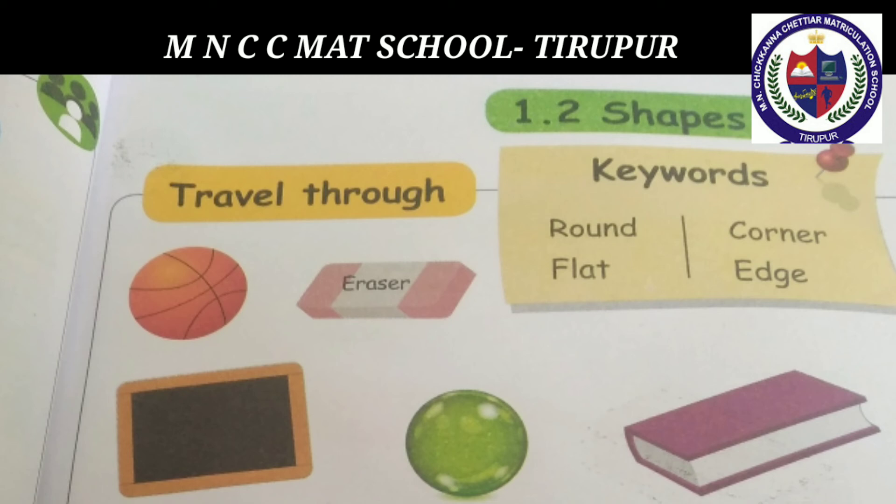Some objects are given: ball, eraser, slate, orange, book. The ball is round. The slate is flat. The eraser is flat. The orange is round. The book is flat.